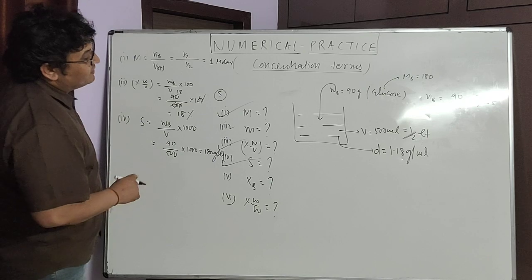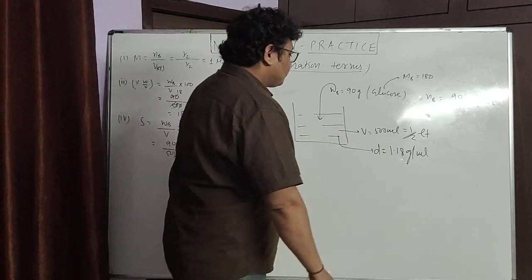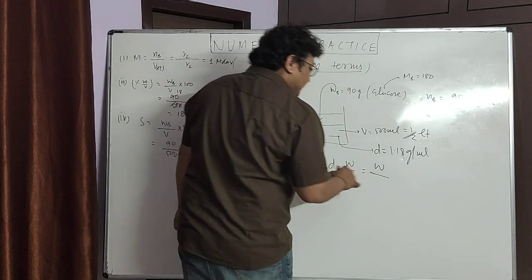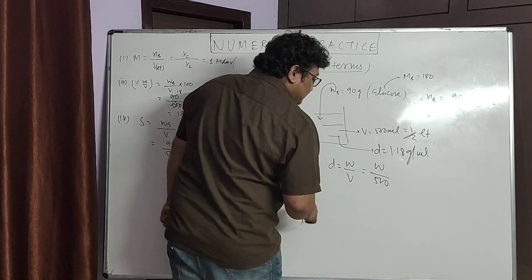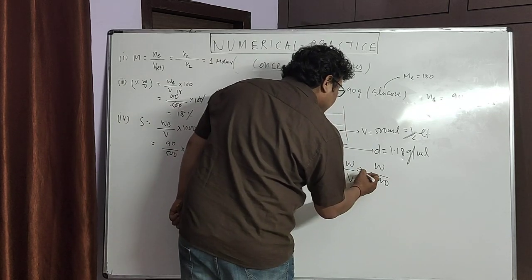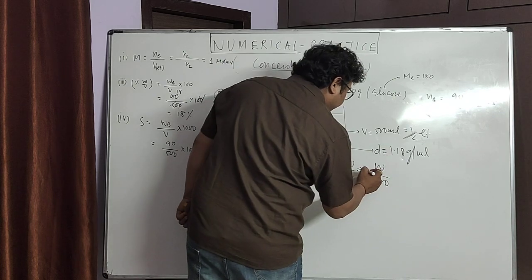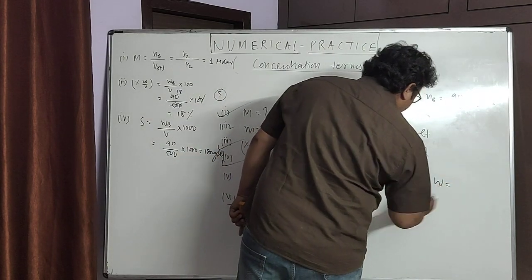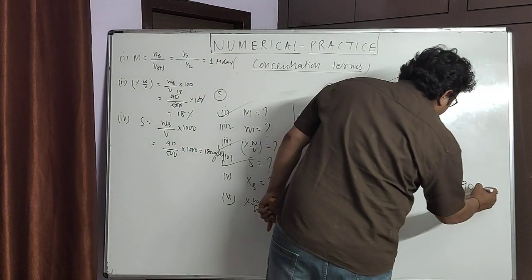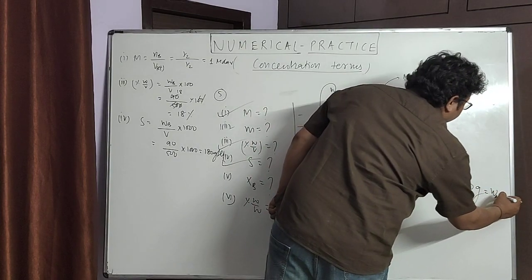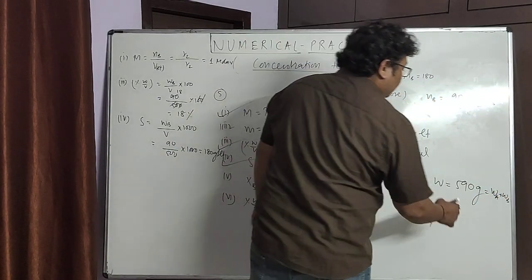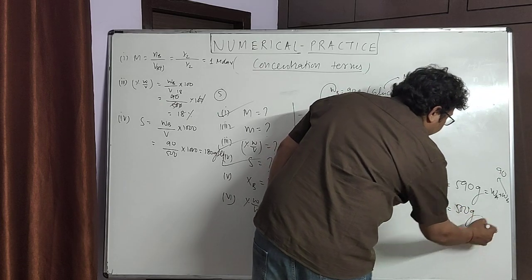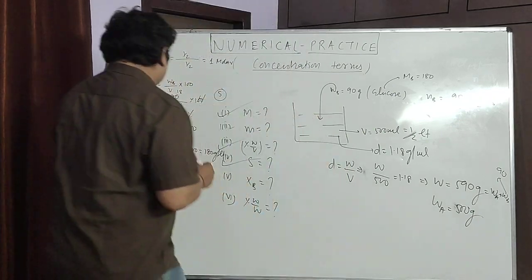For molality, we need the mass of solvent. Using density: weight of solution = volume × density = 500 × 1.18 = 590 grams. Since weight of solution = weight of solvent + weight of solute, and weight of solute is 90 grams, weight of solvent (water) = 590 − 90 = 500 grams.